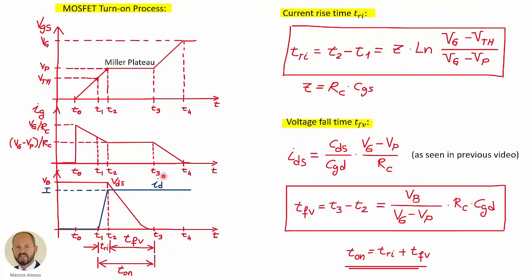For the voltage fall time T sub FB, this corresponds to the interval in which the voltage is decreasing. If we consider linear capacitances to simplify, we saw in the previous video that the current circulating through capacitance CDS is constant and has this expression. Knowing the current and the capacitance CDS, we can very easily calculate the time and obtain this equation. So we have both intervals, and now we can calculate the on-time. The only issue is that these expressions depend on V sub P, the Miller plateau voltage, which also appears here — so we need to calculate its value.